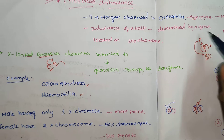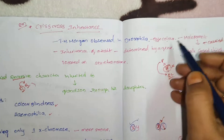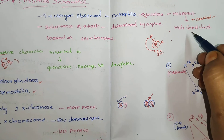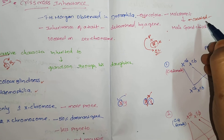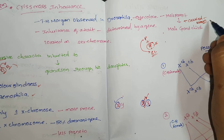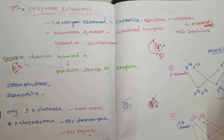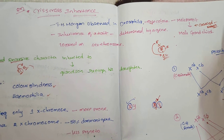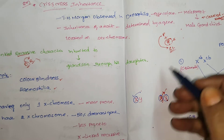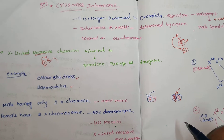Crisscross inheritance was first observed in Drosophila by T.H. Morgan. The character observed was eye color — transferred from the male parent to the male grandchild by a carrier female. Males are very much prone to the disorder, while females are carriers. This is because males have only one X chromosome, whereas females have two X chromosomes.